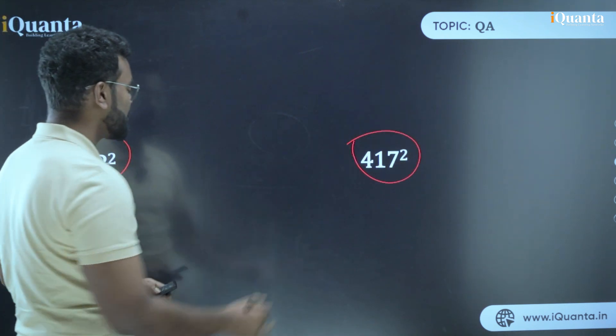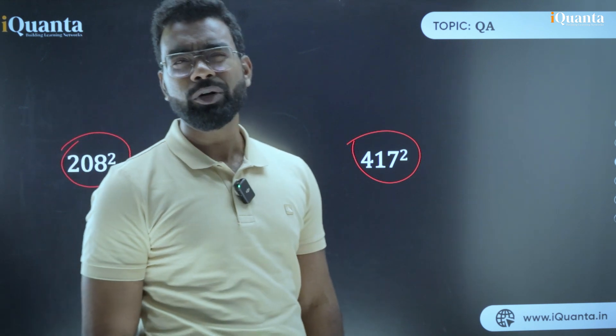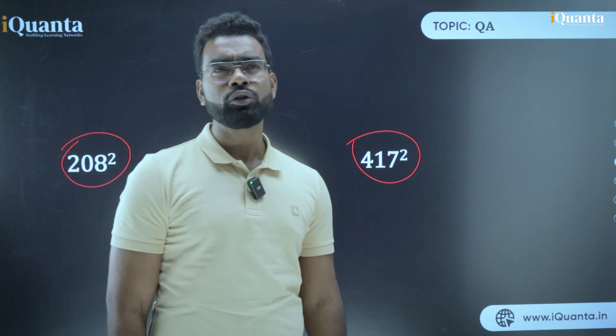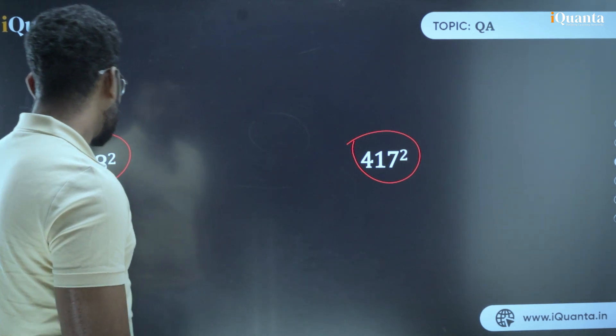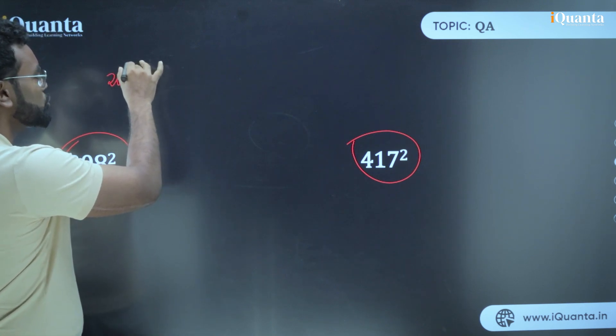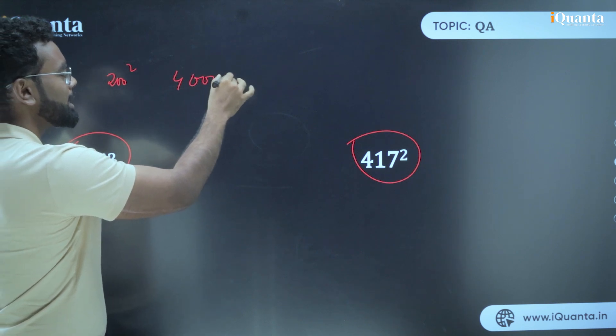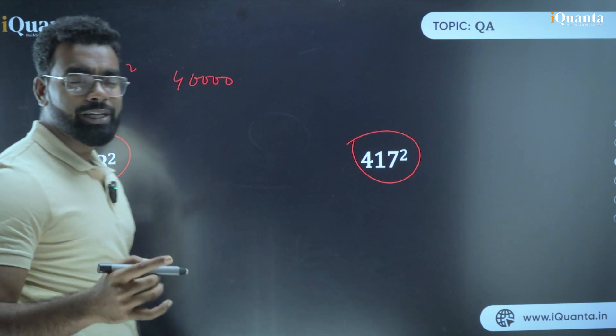Now in case of 208 square, what is the answer for 208 square if I try to do it mentally? The answer should have been 43,264. You can check with the calculator also. Now let's say how we solve it. In this case, what is the base? 200. So do 200 square. 200 square is 40,000.